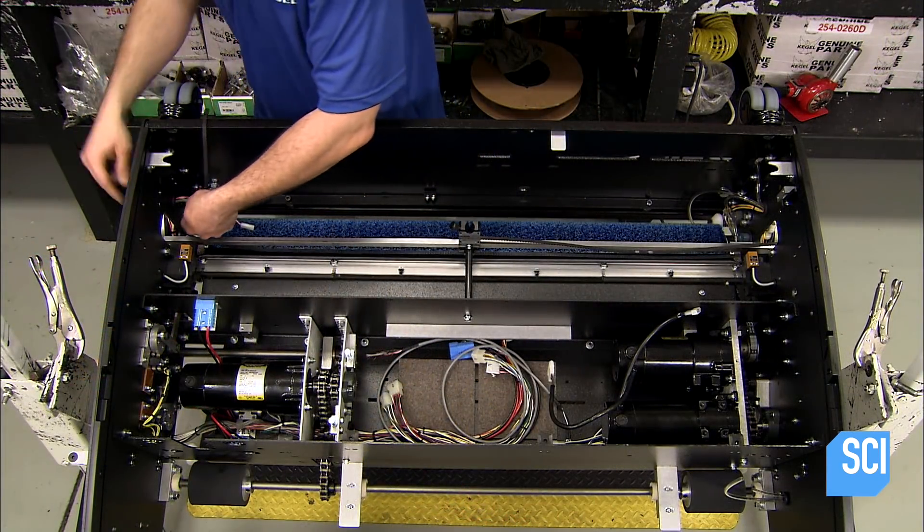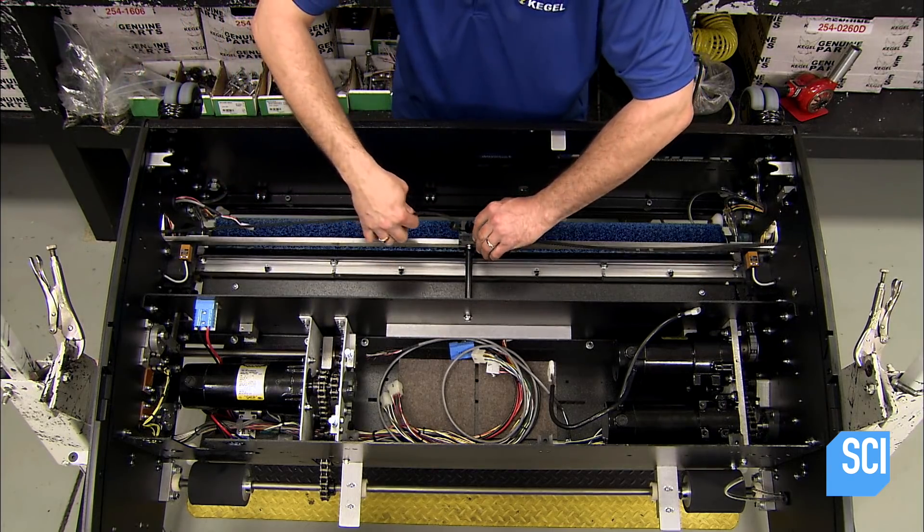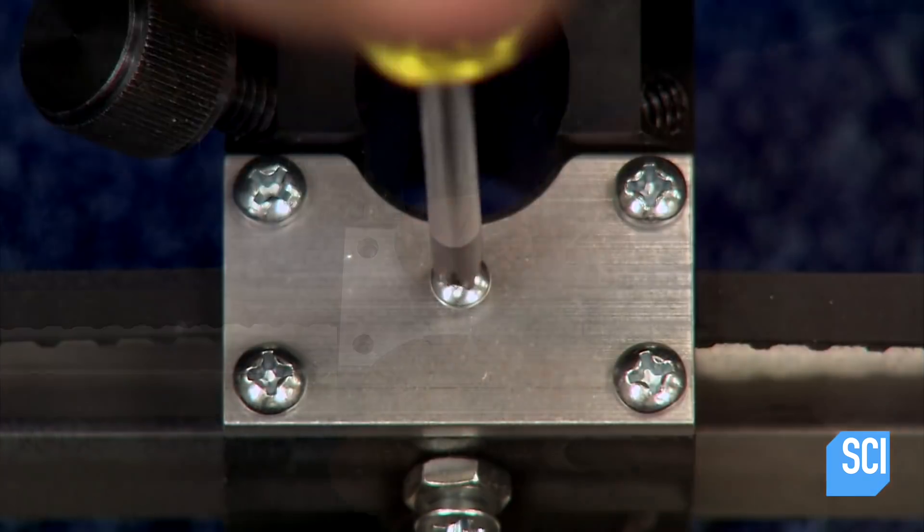He loops a rubber belt in front of the buffer brush and connects it to the oil applicator. The applicator will slide on the belt dispensing small amounts of conditioner.